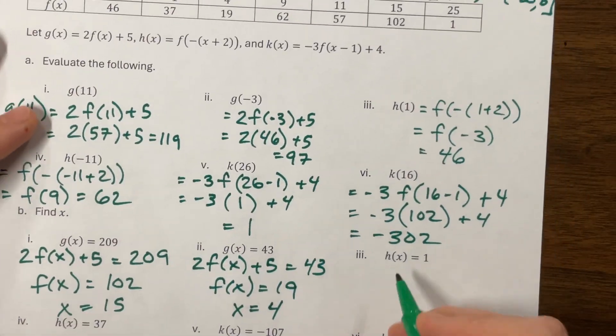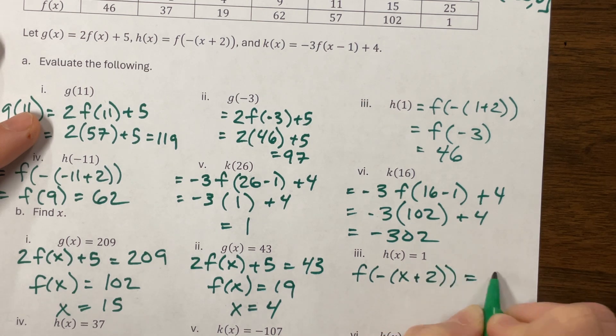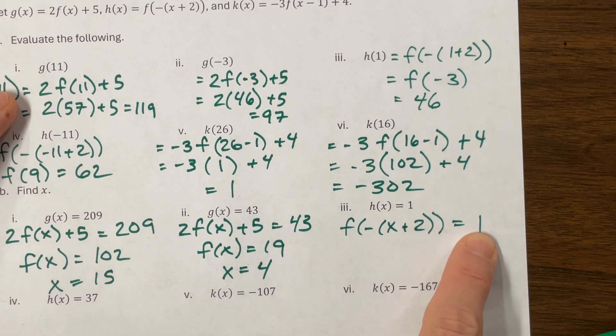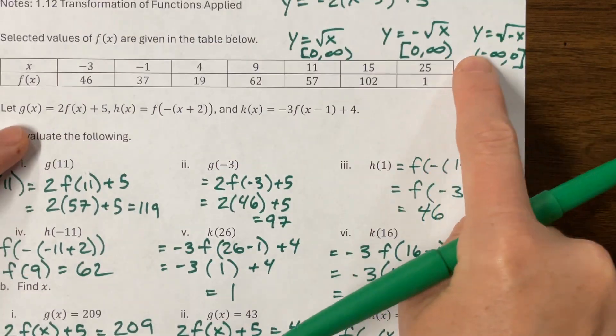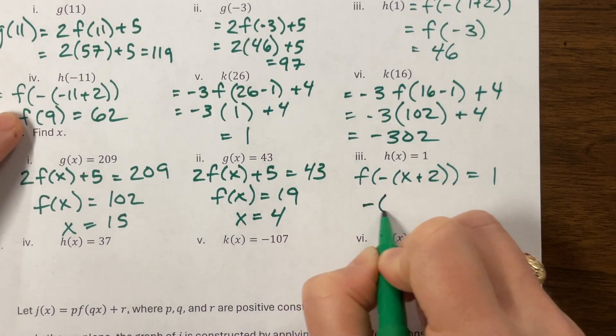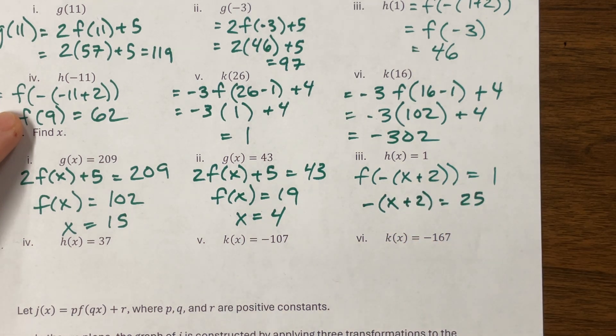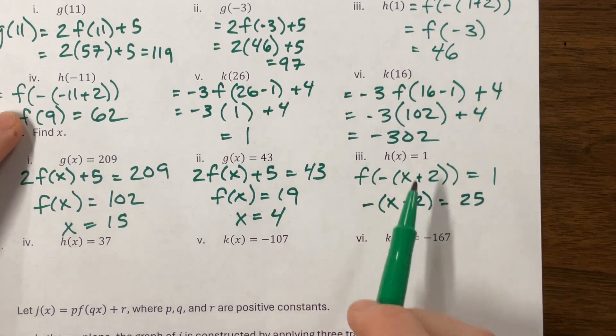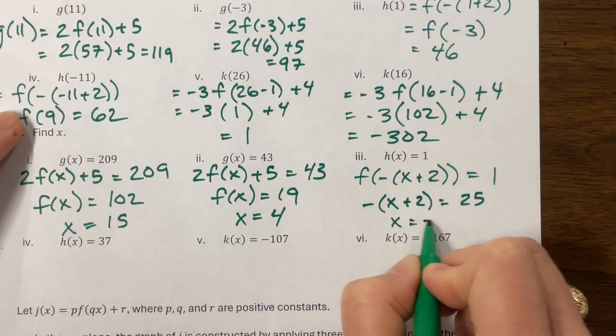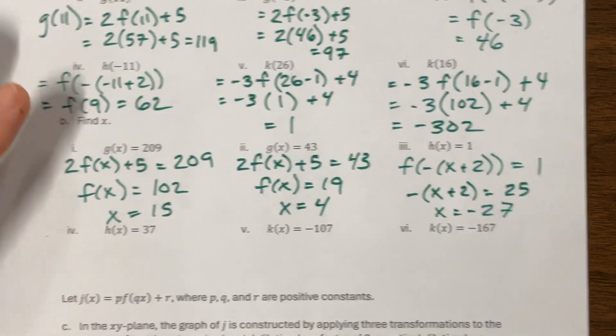H gives us the equation F of negative x plus 2 is equal to 1. So now on this one, F of what is equal to 1? Well, we can go back and look at this table. F of 25 is equal to 1. So this right here becomes this negative x plus 2 is equal to 25. And now we can solve that equation. Because it was everything. It was F of what? Well, the what was this negative x plus 2. Divide that. Subtract x equals. Divide by negative 1 is negative 25. Subtract 2 is negative 27. I ran out of space. So there you go.